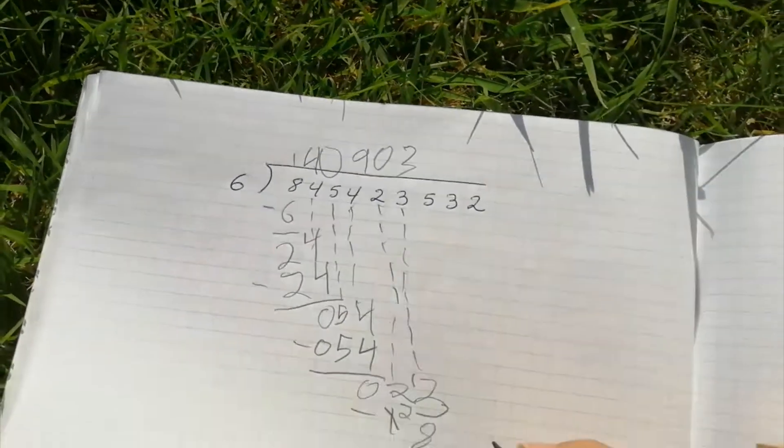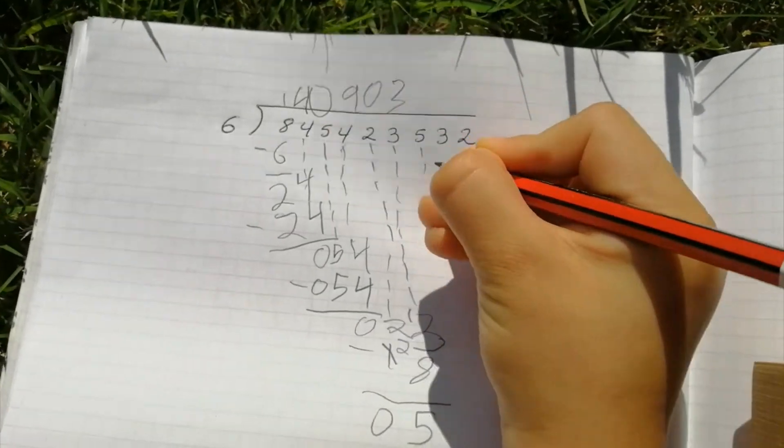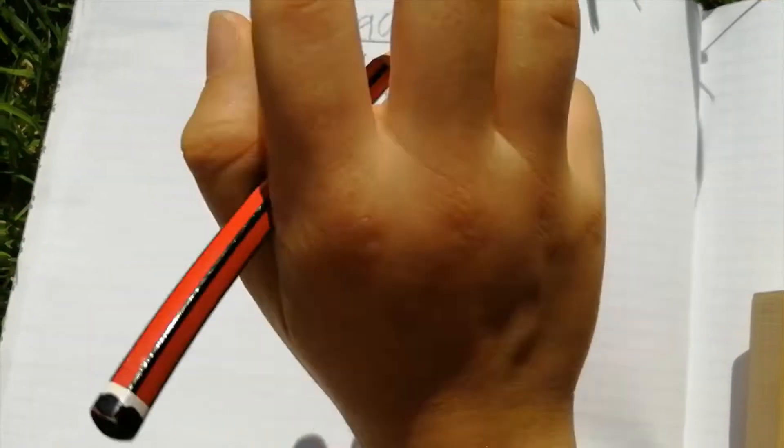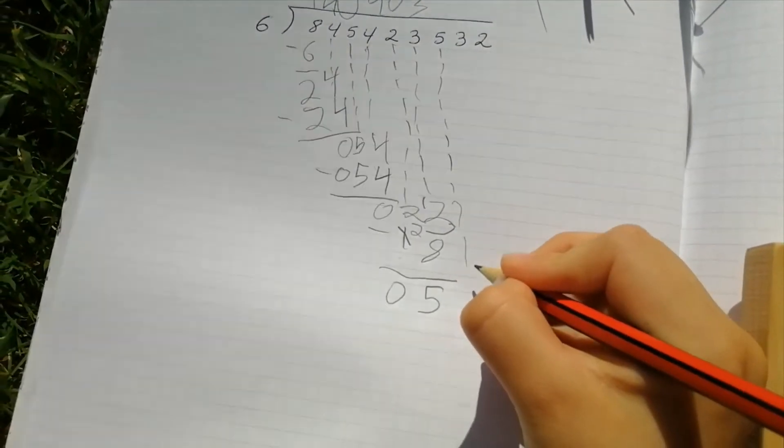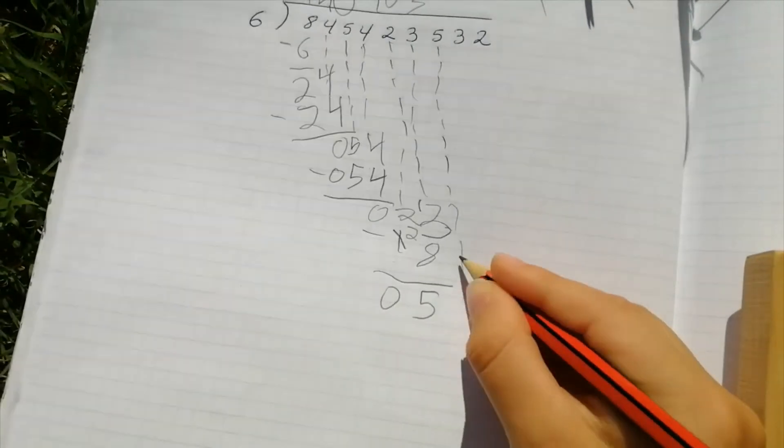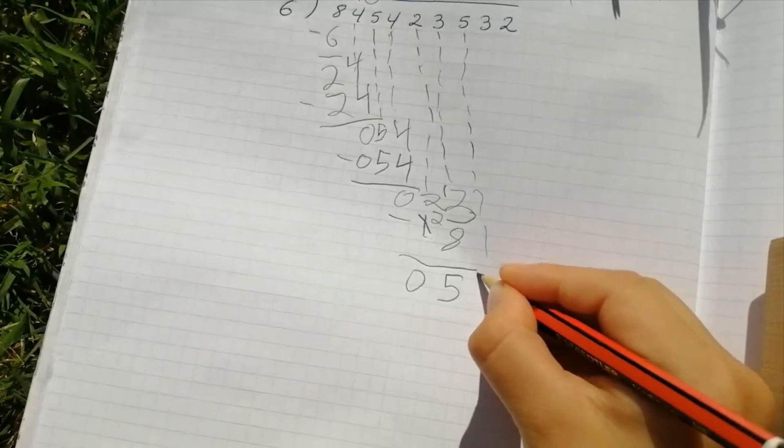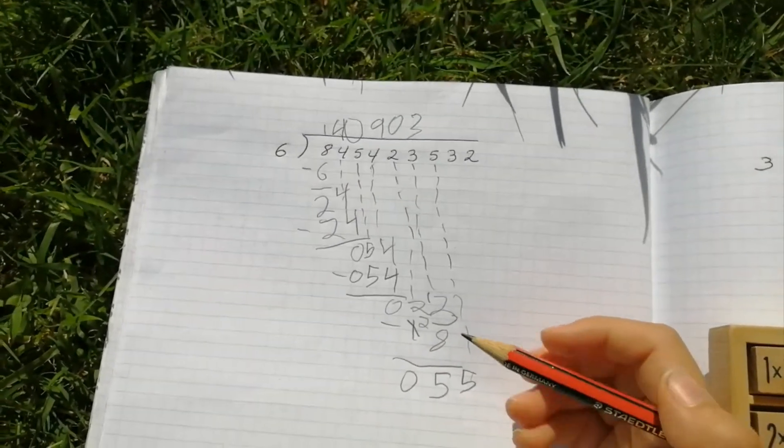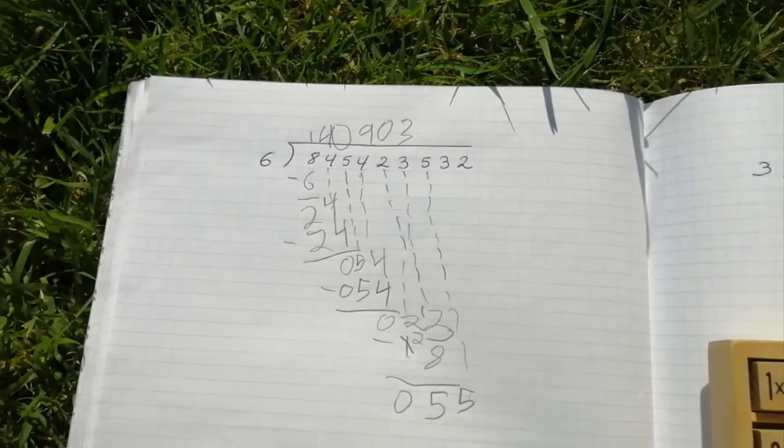And that looks really neat. And then put the next number down. Oh my arm hurts a lot. And do not think that's a one. So and then put a five there. And oh my hand hurts.